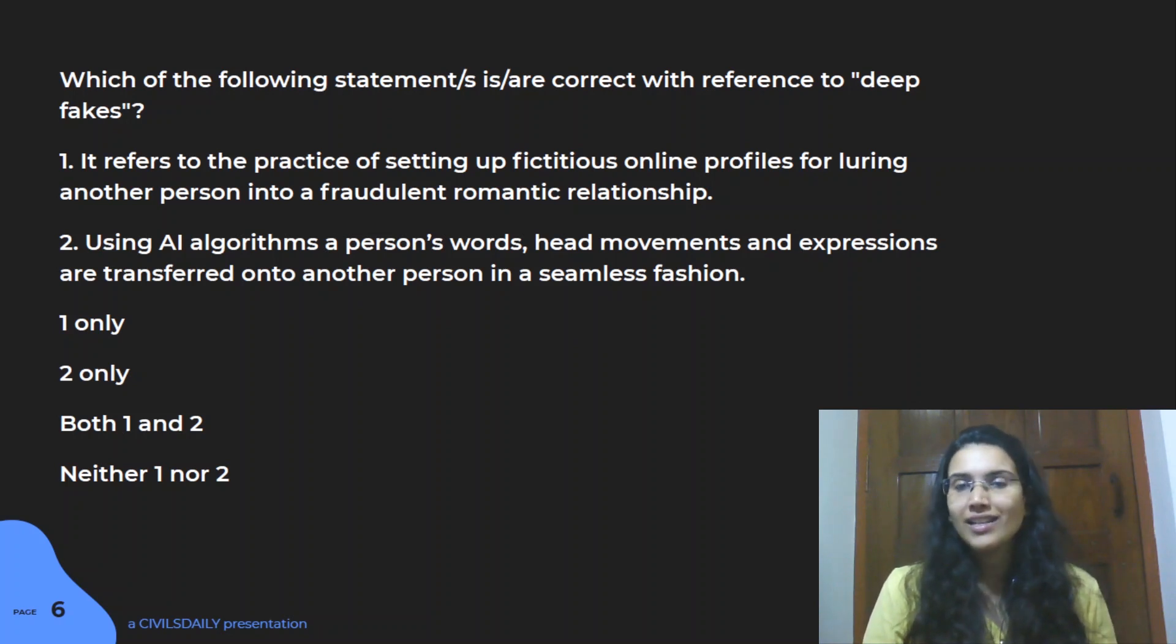Statement two is right, so answer is B. Statement one is wrong. You should also know what statement one stands for. There's this thing called catfish account. Catfish account is where you steal the identity of some other person and create a fake online account of that person. I open an account and steal the identity of some other person and operate that account. There's another thing called honey trapping, which is also the use of romantic relationships where important dignitaries are targeted to get information out of them.